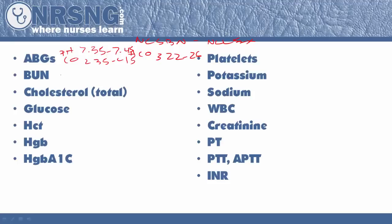For BUN, the number you need to know is 5 to 20 — that can vary by institution, but that's the number I want you to know. For cholesterol, we want total cholesterol to be less than 200; greater than that is going to be a problem for NCLEX. For glucose, the basic range is about 70 to 100, with greater than 120 being diabetic and less than 60 or so being hypoglycemic.